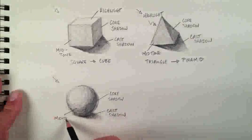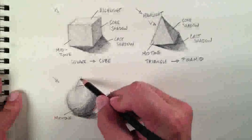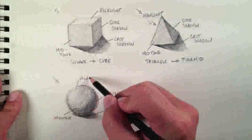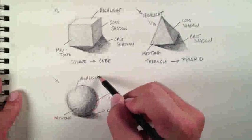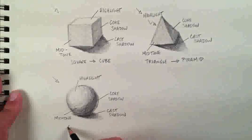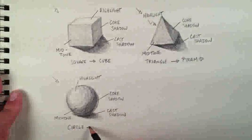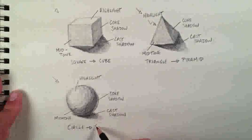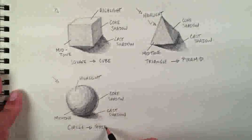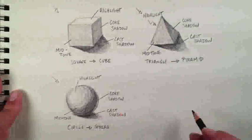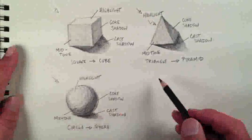We also have a mid-tone and a highlight. So here again, we've taken a circle and created the illusion of a sphere. Now a cube, a pyramid, and a sphere are all geometric forms.